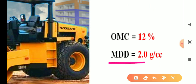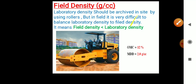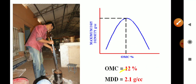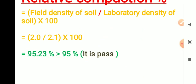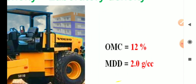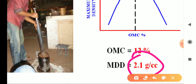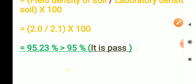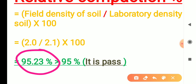The field density obtained is 2.0 and the laboratory density is 2.1. Now we calculate relative compaction: field density divided by laboratory density multiplied by 100 = 2.0 / 2.1 × 100 = 95.23 percent. Since this is more than 95 percent, it is passed. If it is less than 95 percent, the rollers were not passed correctly or insufficient water was added.